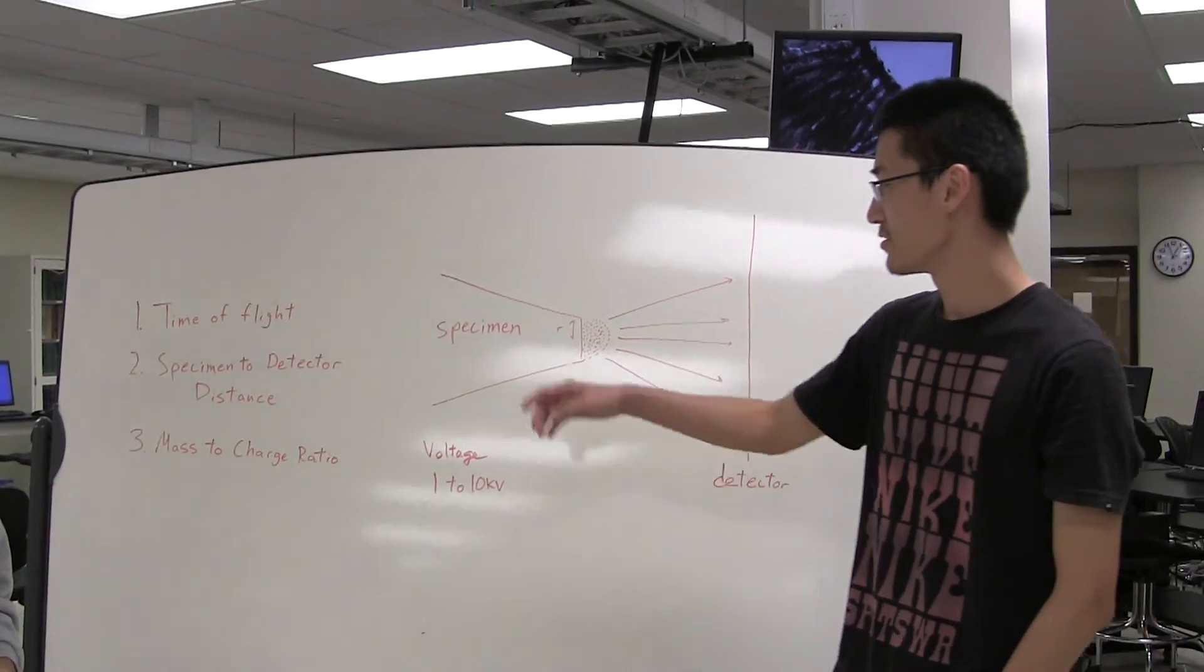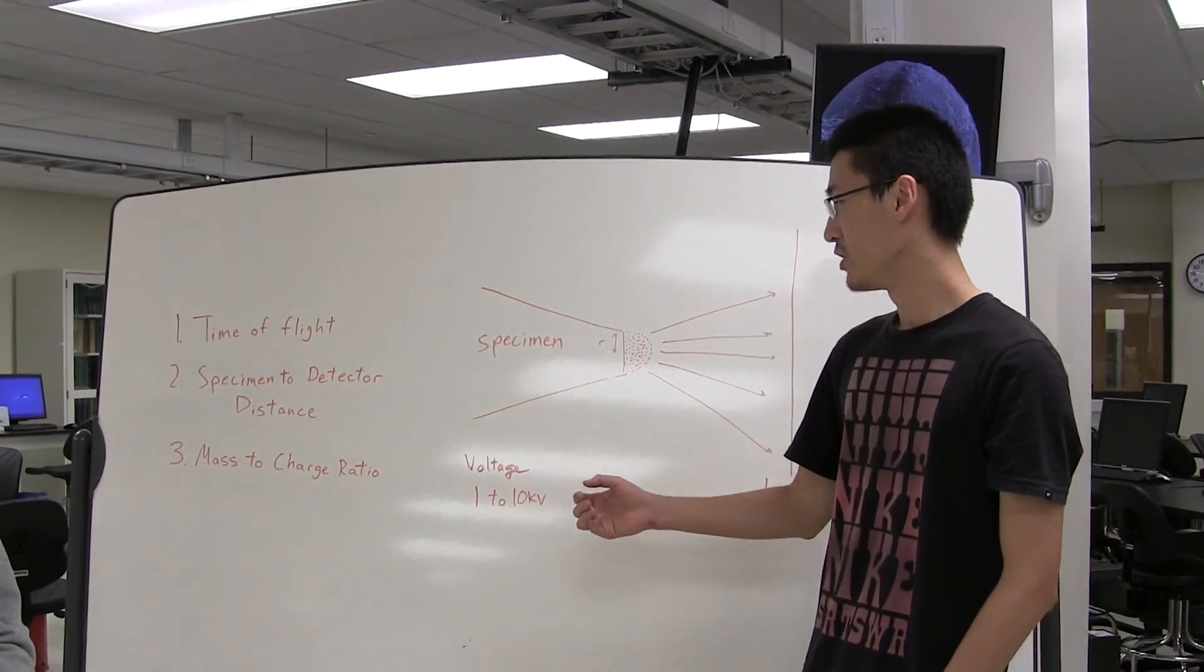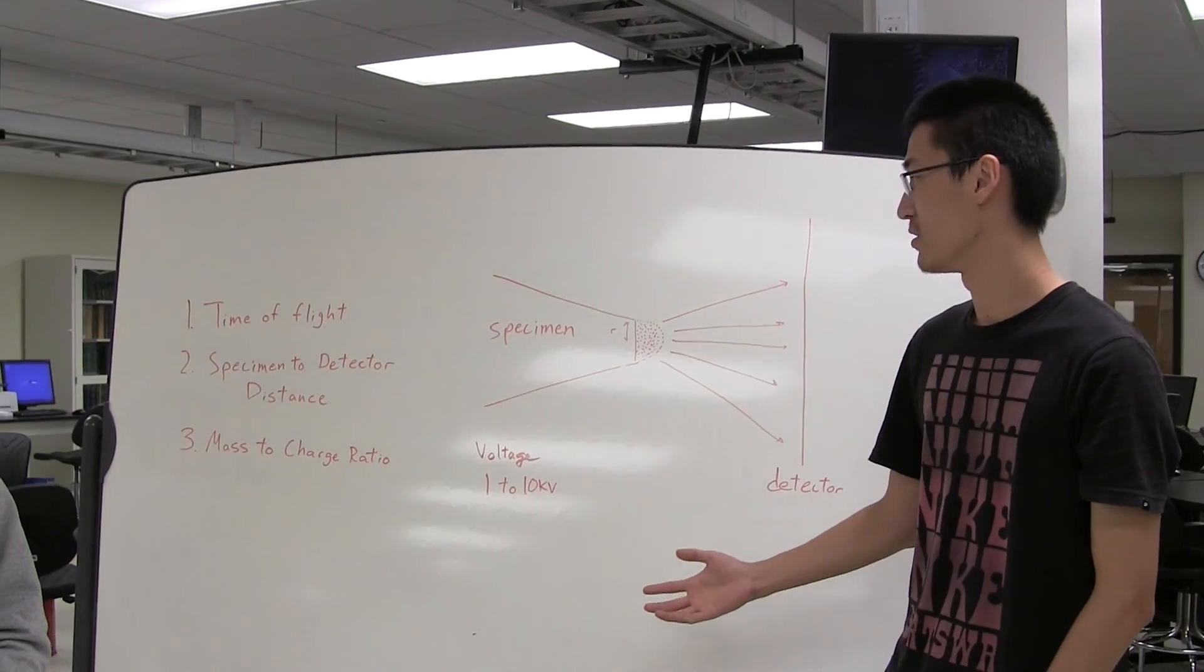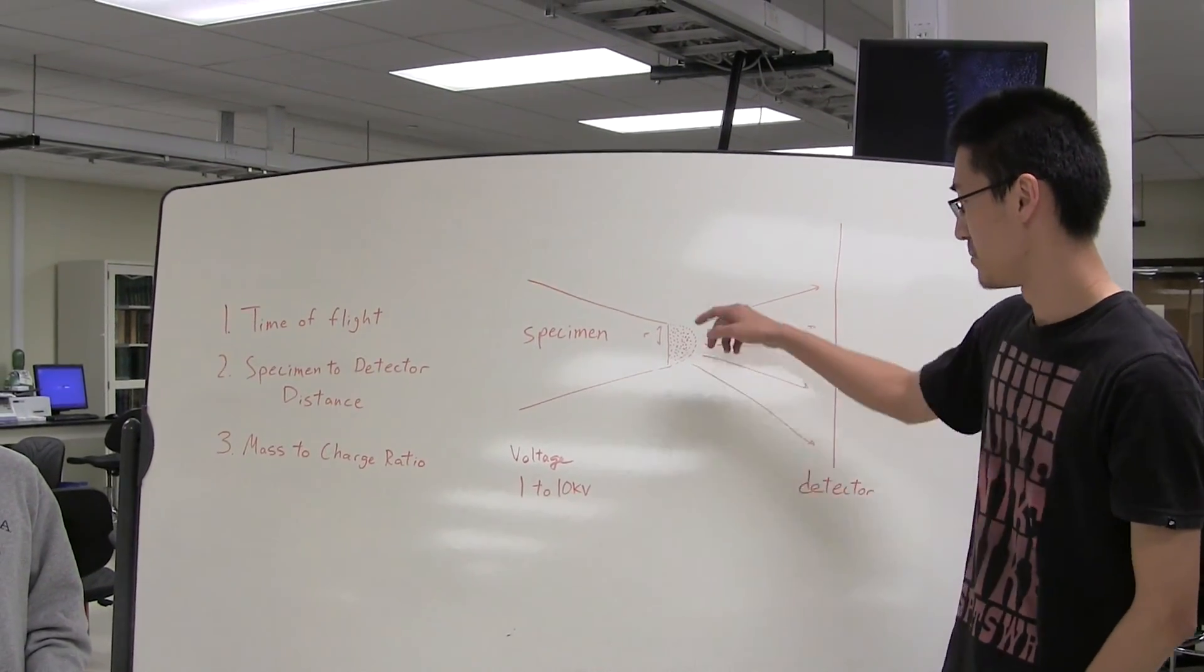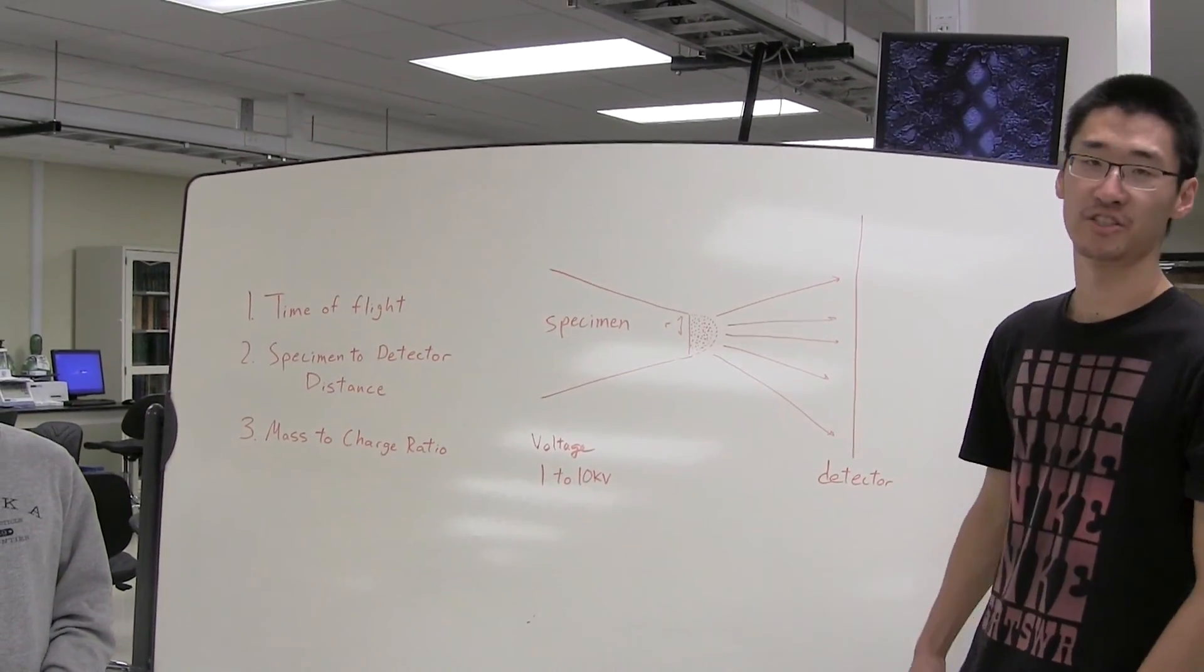And using these three pieces of information, we can use a computer to build a model to show what the specimen looks like at the atomic scale.